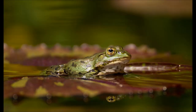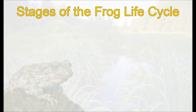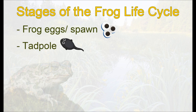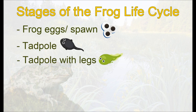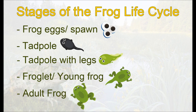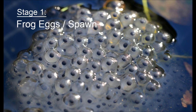Stages of the frog life cycle: frog eggs, also known as spawn; tadpole; tadpole with legs; froglet, also known as a young frog; and adult frog.